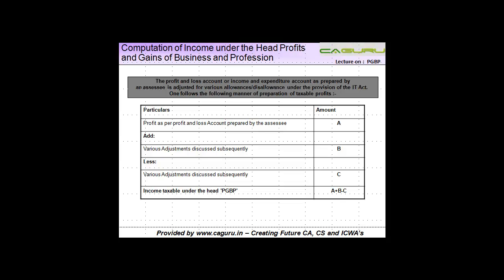In order to arrive at the taxable income — you can't be expected to pay a flat tax on whatever the revenue number is. The fact of life is, if I earn 100, I might be incurring 70 or 80 as an expense, so why should I pay a tax on 100?